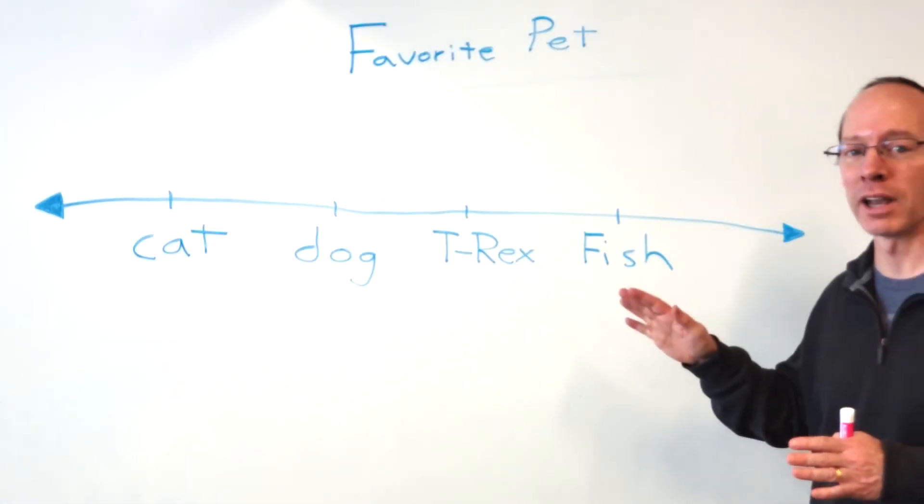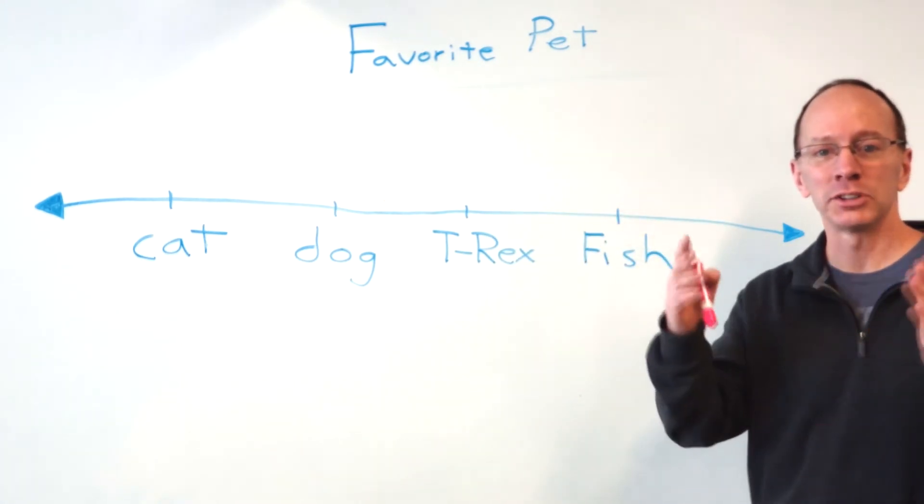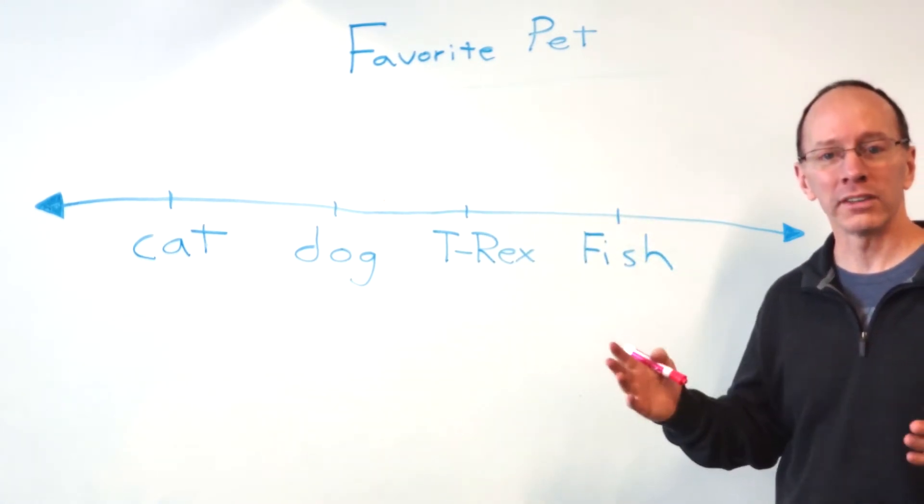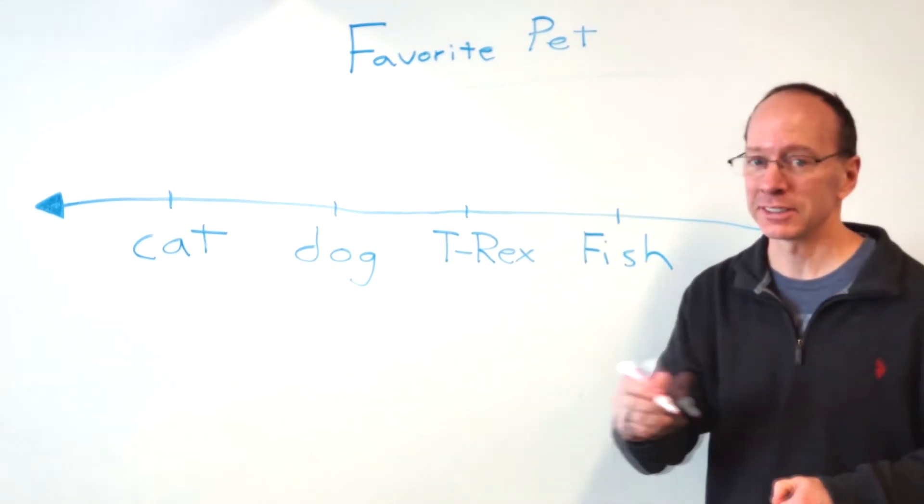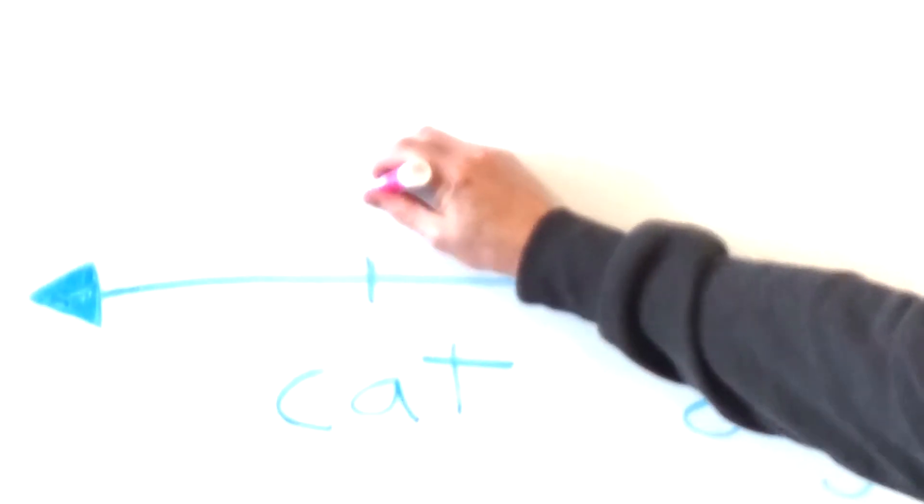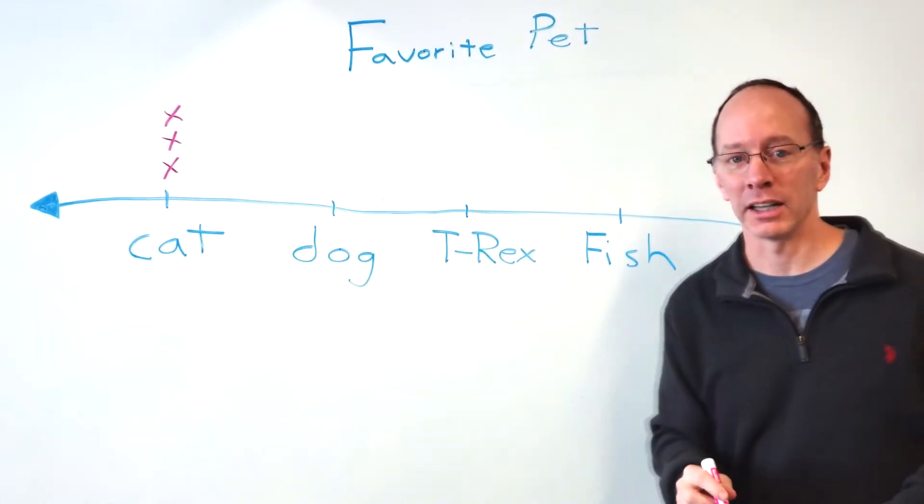We've got a new line plot. Our title is Favorite Pet. So I asked some students in the classroom what their favorite pet was. So I had three students that had a cat. That was their favorite pet.